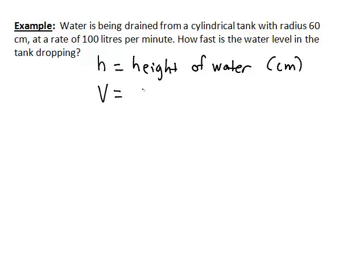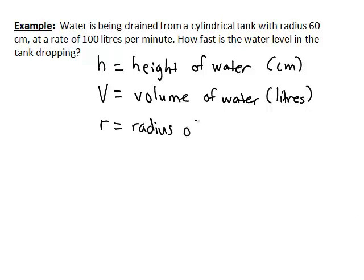While V we're obviously interested in, since we're told about it draining at 100 liters per minute. So that relates to the volume of water in the tank, where that is measured in liters. And we also have some information about r, which is the radius of the tank. And that is actually fixed, rather than being a variable for this example, because we are told specifically that is 60 centimeters.